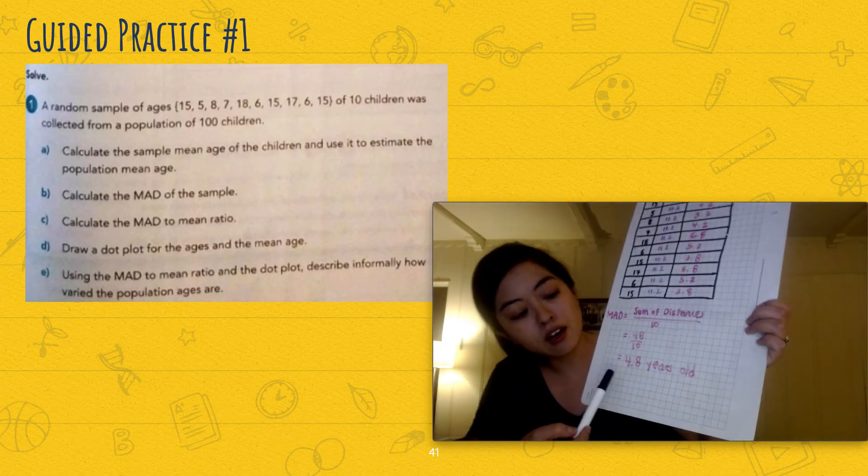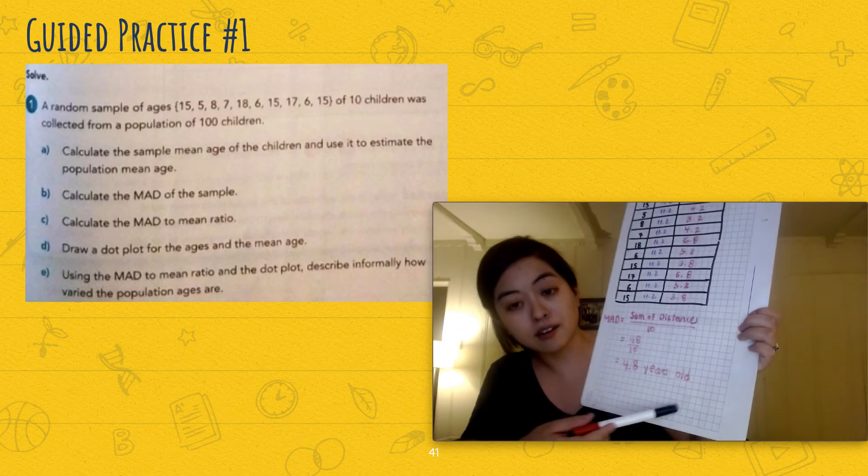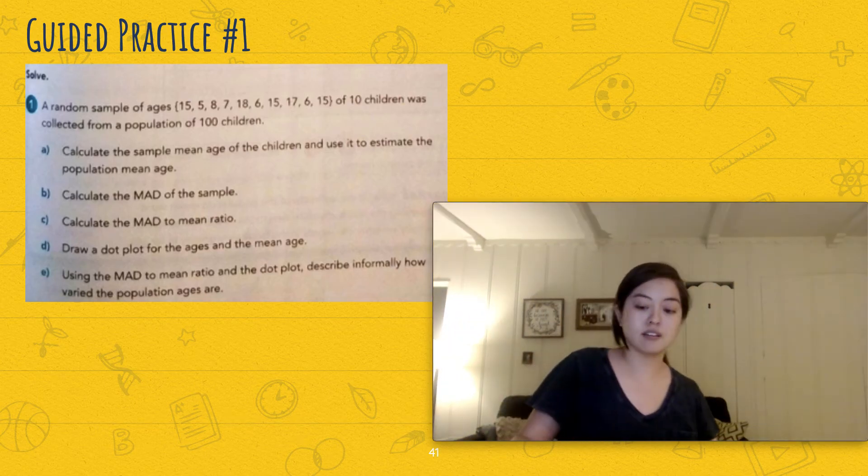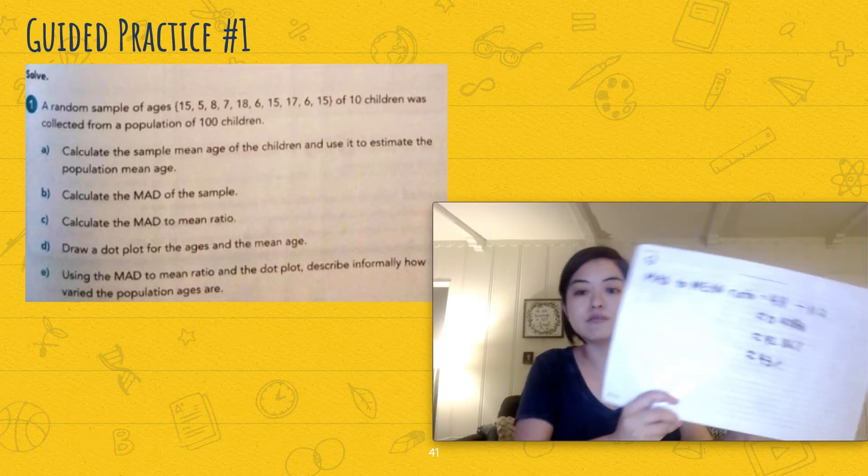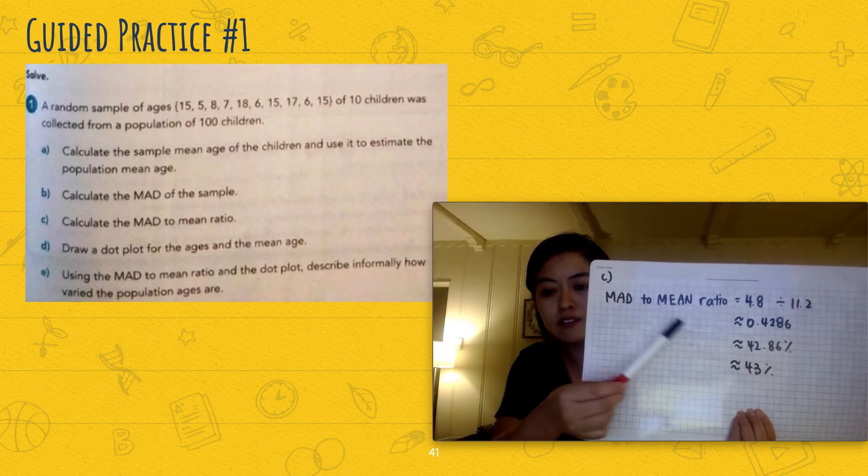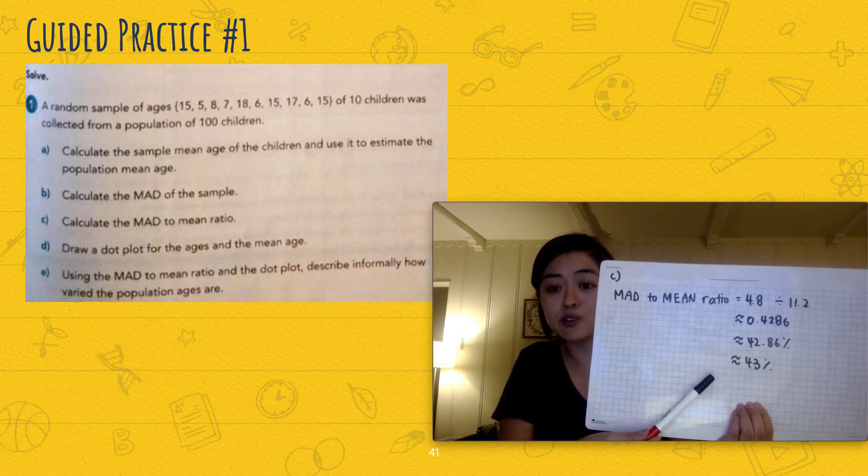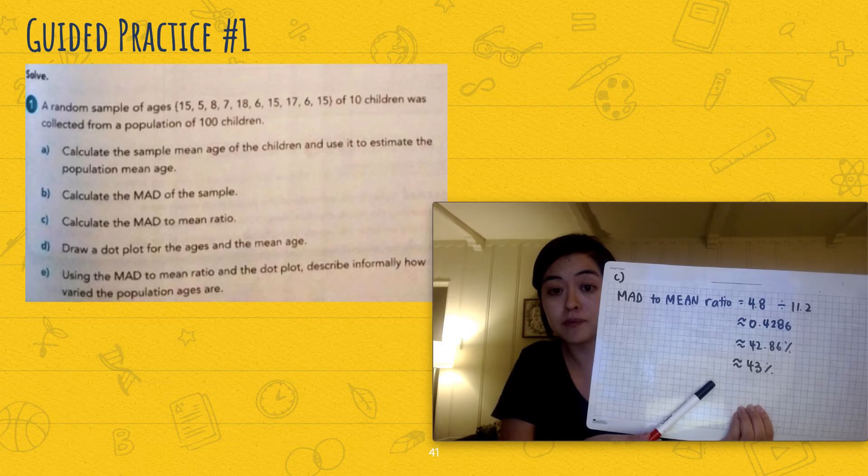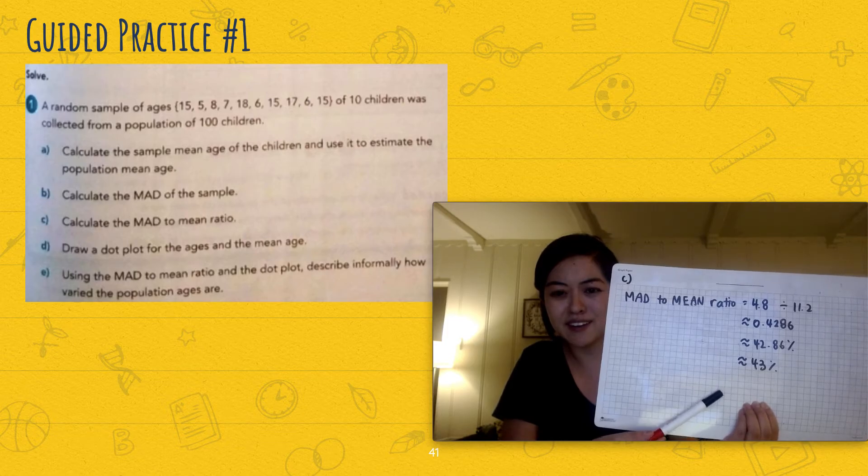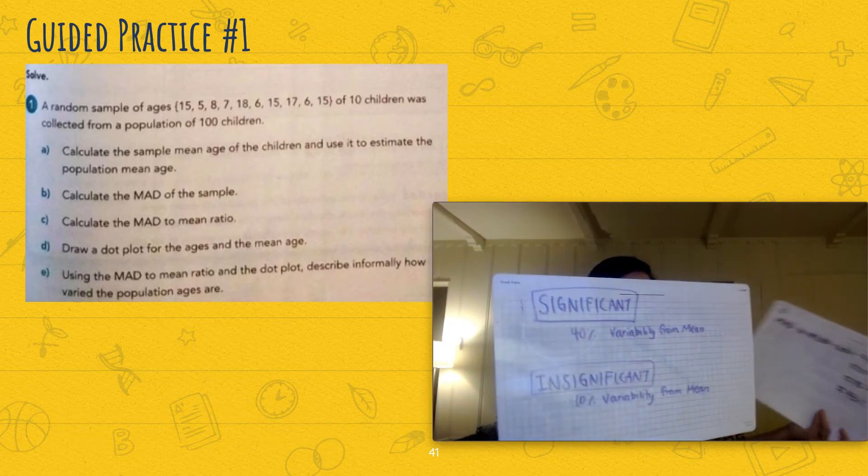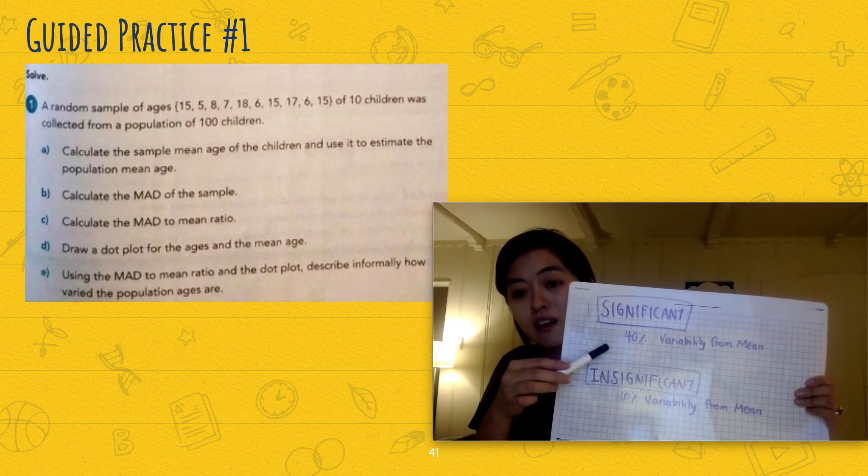And then part C is we're going to calculate the MAD to mean ratio here, which is 4.8 divided by 11.2, and you get basically approximately 43% when I round it. And what does this mean? Well remember, 43%, that's actually significant, right? Because it's higher than 40.